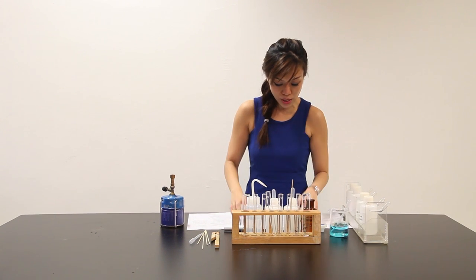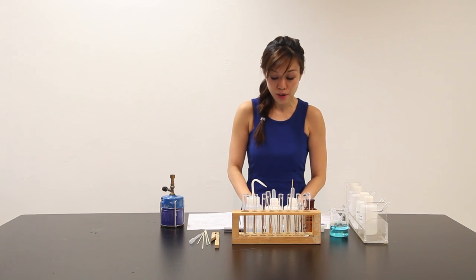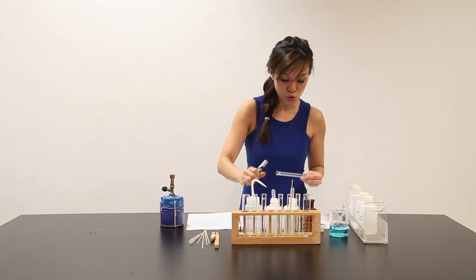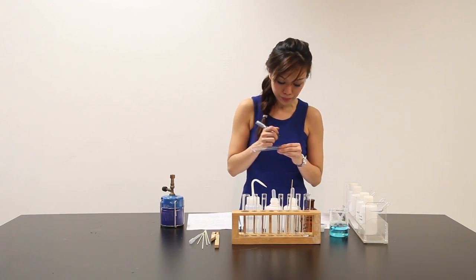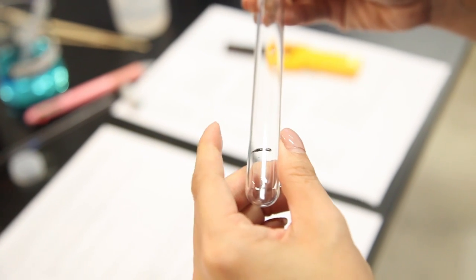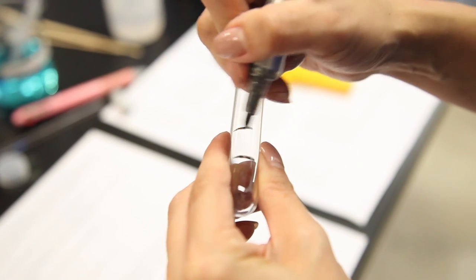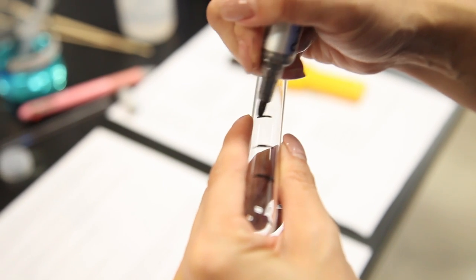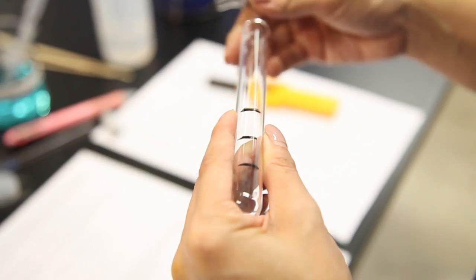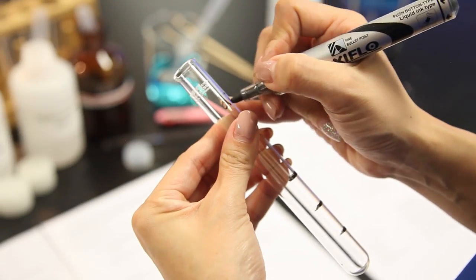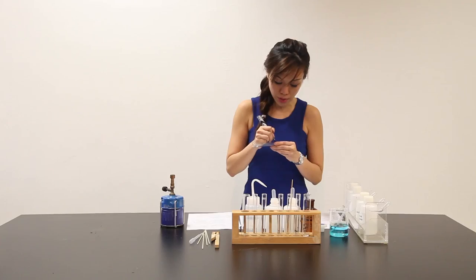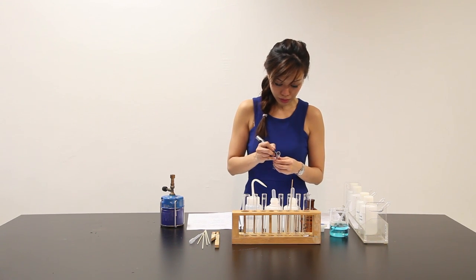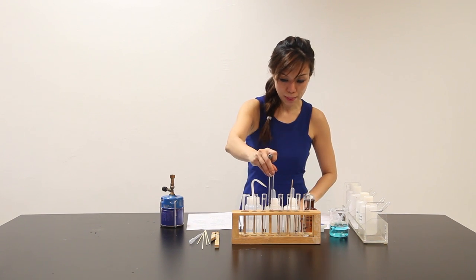And then it moves on to say, using solution Y, perform the following test and record your observation to about 2 cm³ of Y. So I'm supposed to draw out 2 cm³ of Y. And add another 2 cm³ of barium chloride.